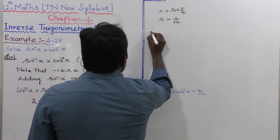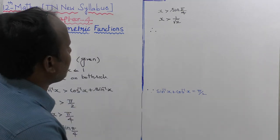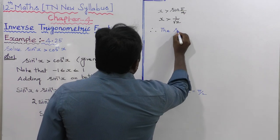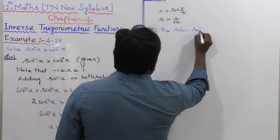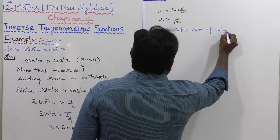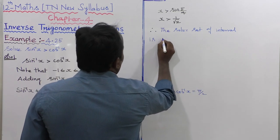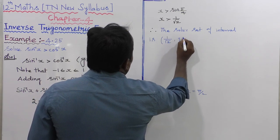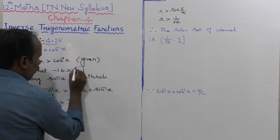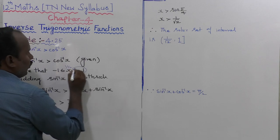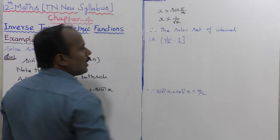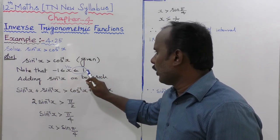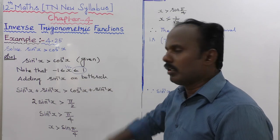Therefore, the solution set is the interval (1/√2, 1] — open at 1/√2 because the inequality is strictly greater than (not greater than or equal to), and closed at 1 because of the domain condition -1 ≤ x ≤ 1. That is the important point of this problem.